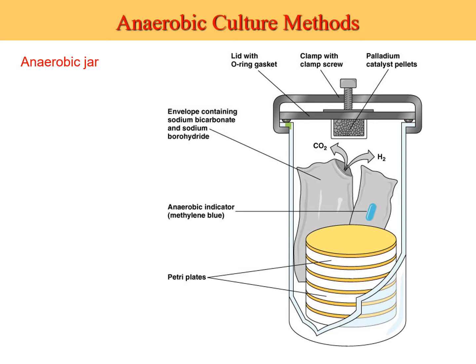Anaerobic culture can be done in a chamber. You have little pouches — you cut them open, add a little water, and just before you close the chamber they give off CO2 and hydrogen gas, which helps drive off oxygen relative to other gases. There's also an indicator that changes color to confirm anaerobic conditions, and palladium catalyst pellets that take up oxygen, making the chamber anaerobic.